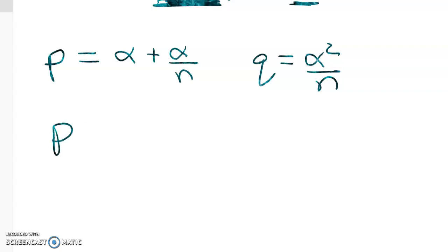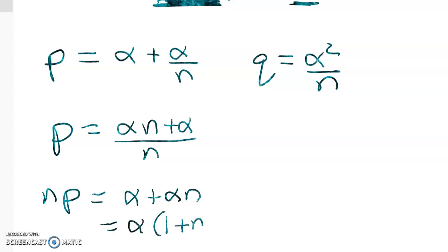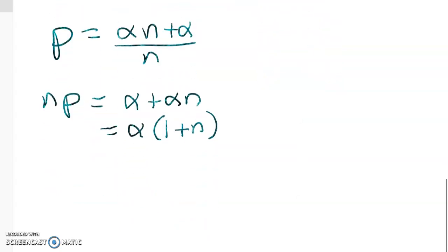Here we've got p is equal to alpha times n plus alpha over n. So np is equal to alpha plus alpha n, which gives me alpha into 1 plus n. So solving that for alpha, I'm going to get np over 1 plus n. And you might go, well how did I know to do that?